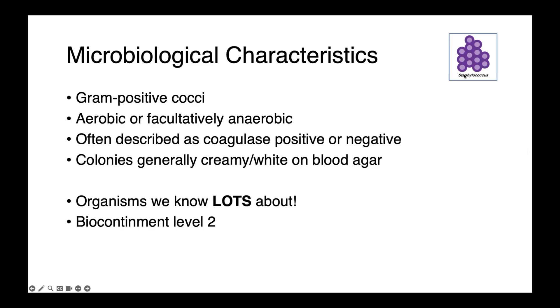This is a genus that we know a lot about. Organisms within this genus are very important human and veterinary pathogens. Staphylococci are gram-positive cocci, and they're aerobic or facultatively anaerobic — aerobic meaning they can grow in the presence of oxygen, and facultatively anaerobic meaning they have the ability to grow under anaerobic conditions. Staphylococci are frequently described as either coagulase positive or negative, which is an important biochemical differentiation. Colonies are generally creamy or white-colored on blood agar, and these are all biosafety containment level 2 bacteria.